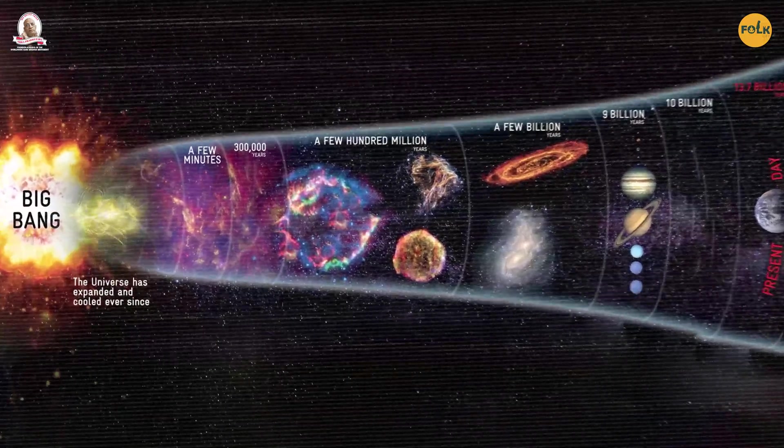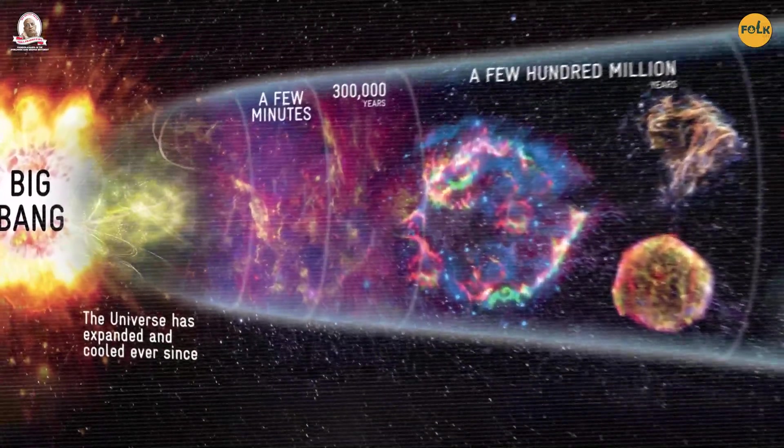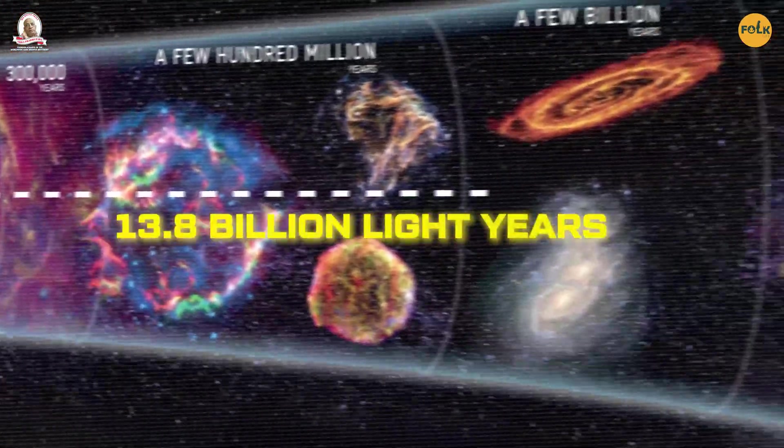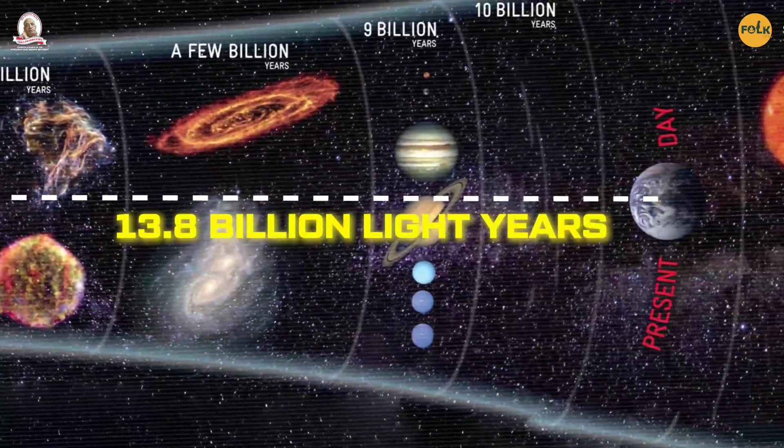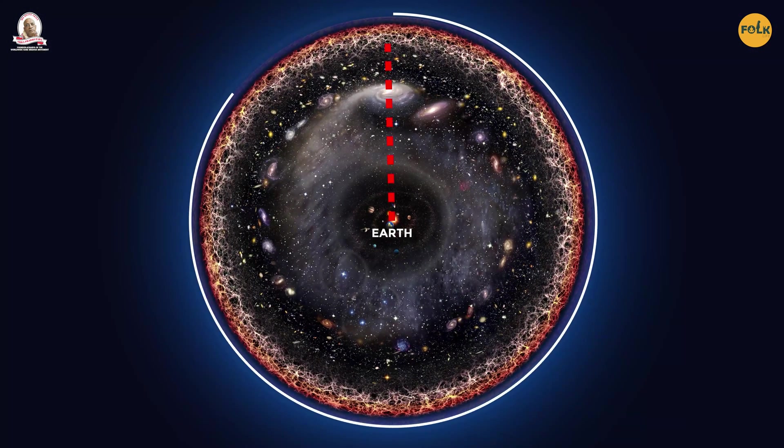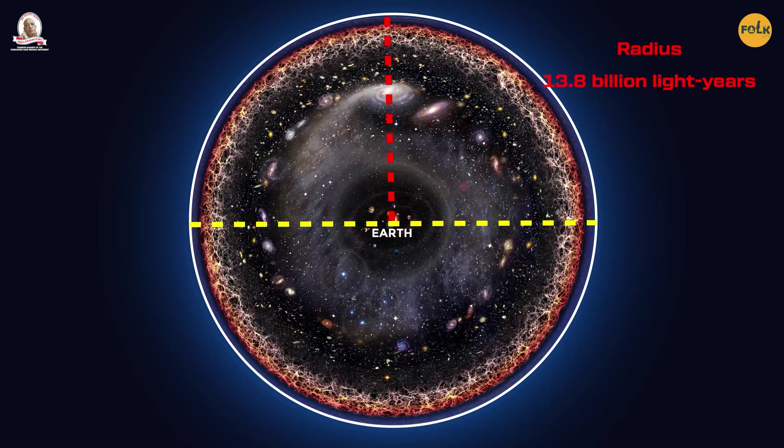This directly means that the spot in space from where this microwave radiation was produced is at a distance of 13.8 billion light-years from Earth today. So, if we assume that Earth is at the center of the universe, then the universe's radius is 13.8 billion light-years, and the diameter becomes 27.8 billion light-years.